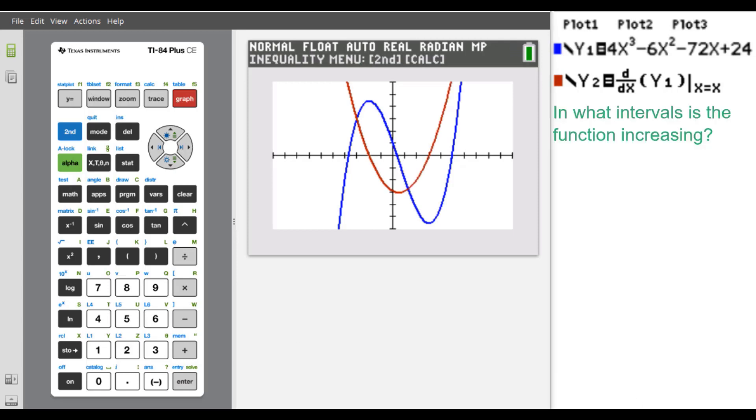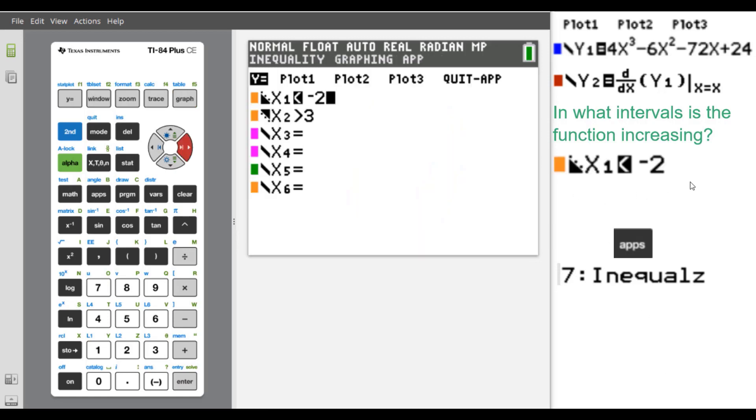So in what intervals is the function increasing? We will use the Inequalities app to help us visualize this better. Let's graph x is less than negative 2 in this pleasingly peach color.